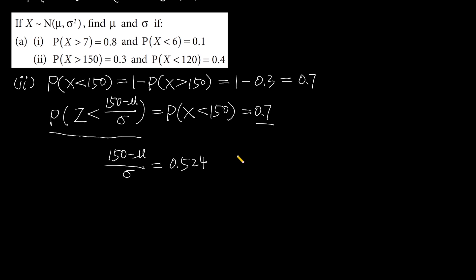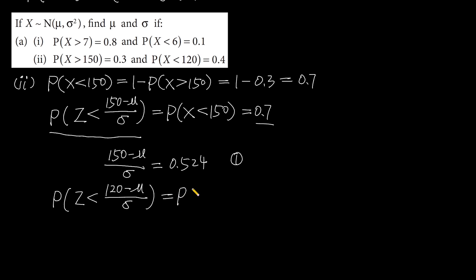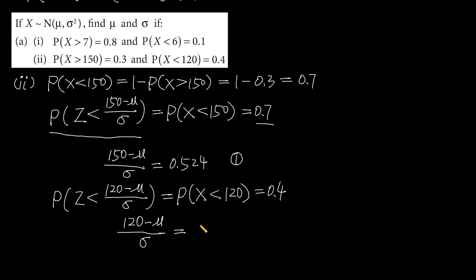The probability that x is bigger than 120 equals 0.4. Using the calculator, we find that (120 minus mu) over the standard deviation equals negative 0.524. This is equation 2.